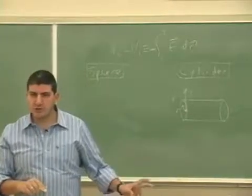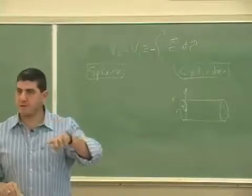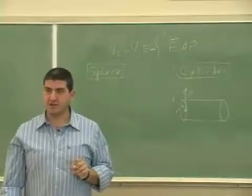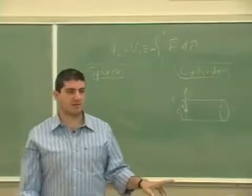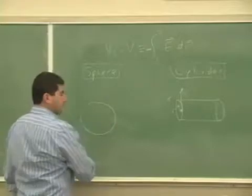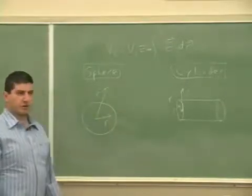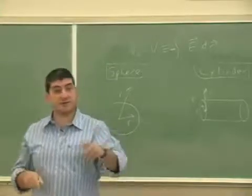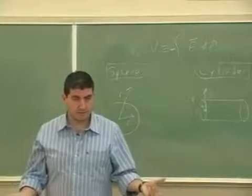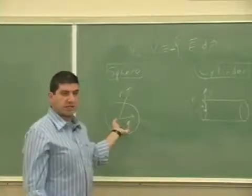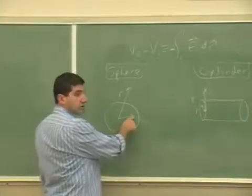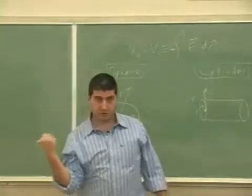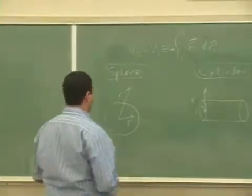Do you remember when we used Gauss's law to find the electric field outside of a cylinder and electric field inside of a cylinder, when the cylinder had non-uniform charge density? Same thing with the sphere — we used Gauss's law to find the electric field inside and outside of a sphere. So for the same reason, if I want to find the potential here, instead of integrating over the whole thing, I could use the electric field we already got from before.